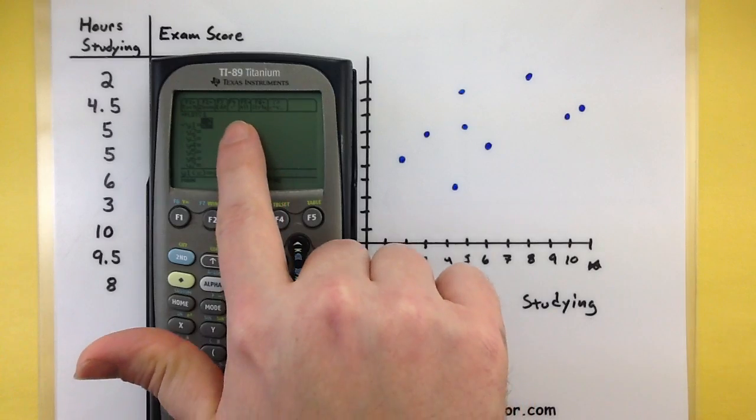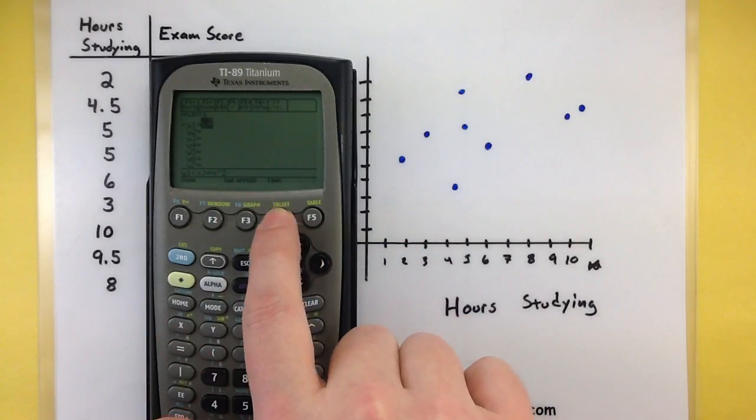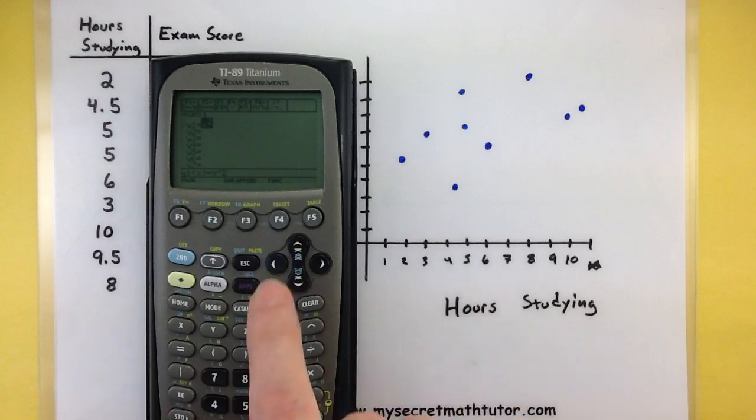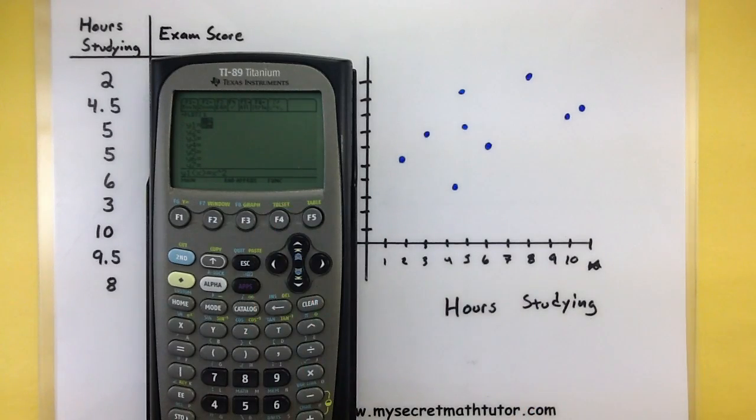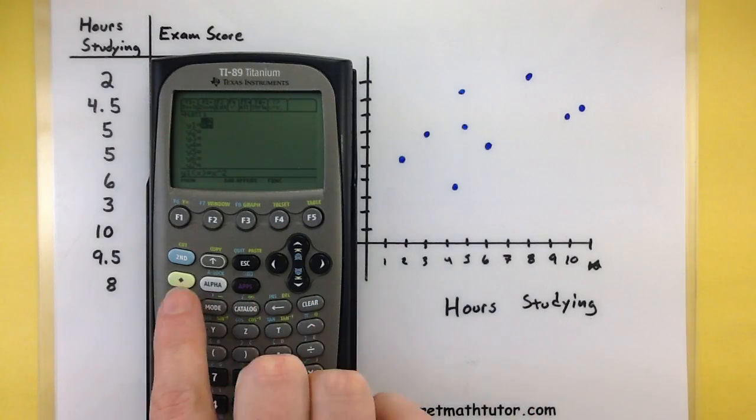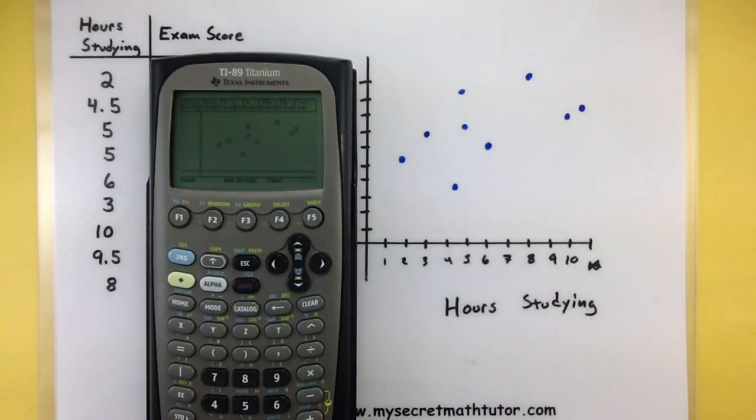So if you have other equations and graphs on there you don't want to see, go into your y equals screen and you can either just erase this entirely or you could take the check mark off. To take the check mark off just press your F4 button. You'll see that little check mark that was next to it is gone. So check mark it'll show it, no check mark it's entirely gone. That way when we go actually look at our graph it won't plot that x squared. Okay so there are lots of menus to go through, lots of things you have to be careful you set correctly, but now we have our entire data plot and we can see a nice scatter plot.